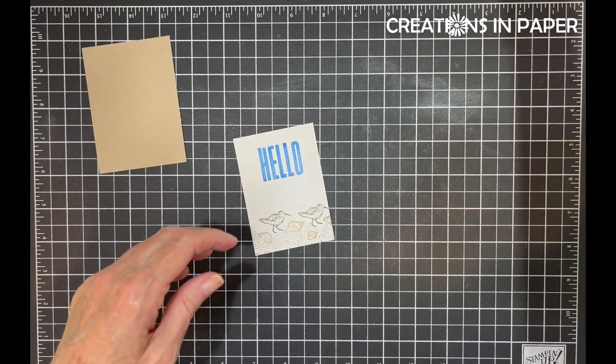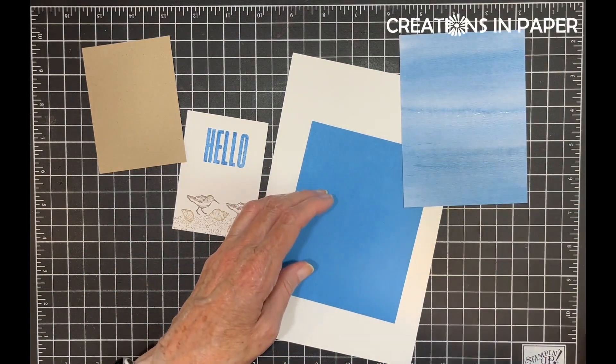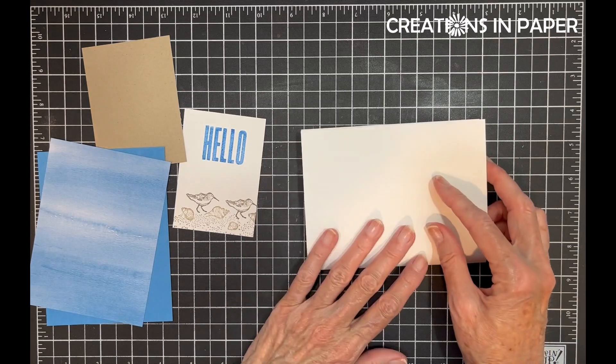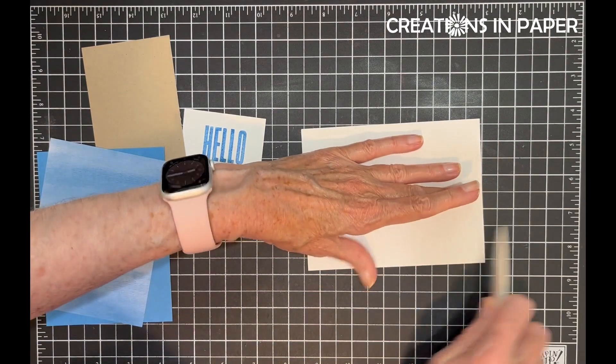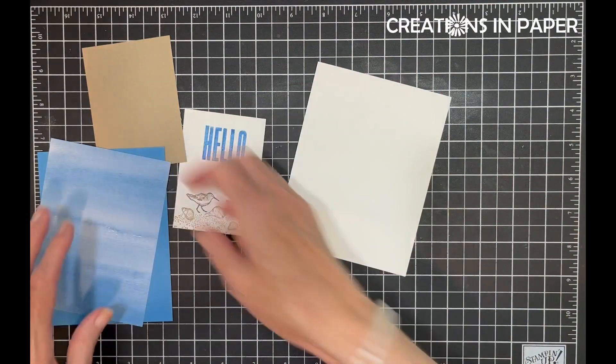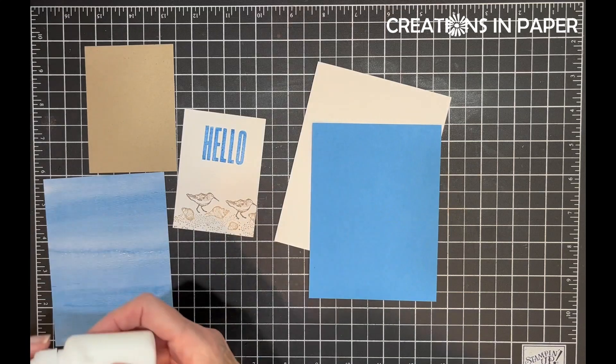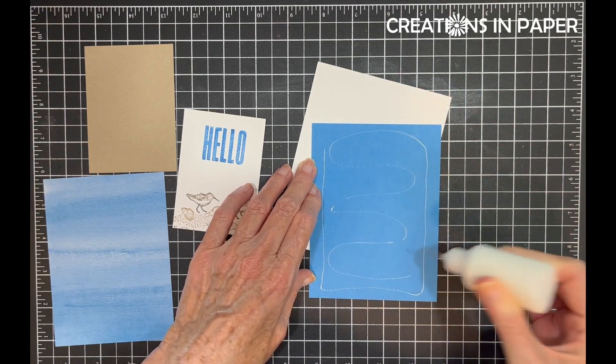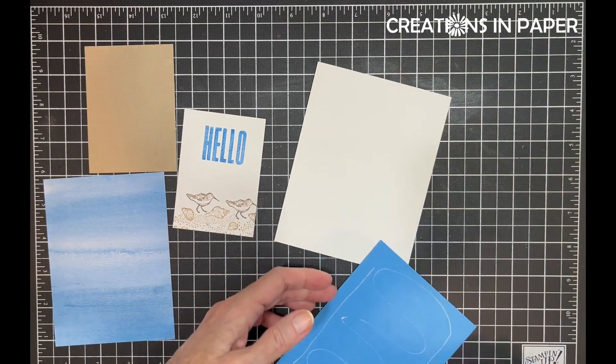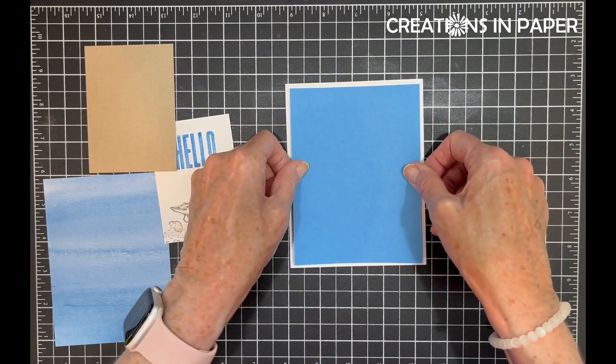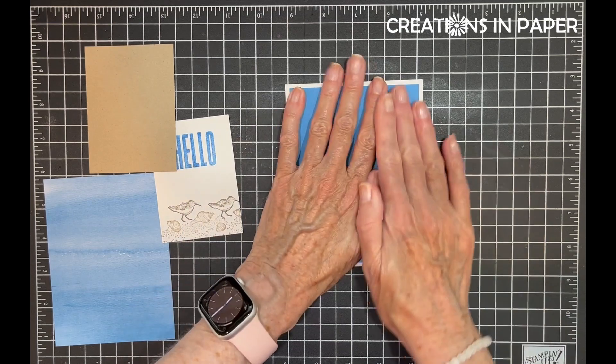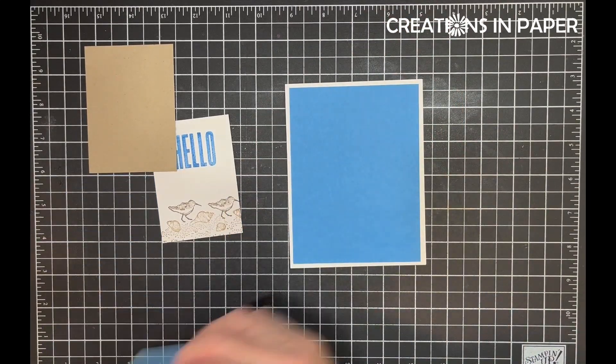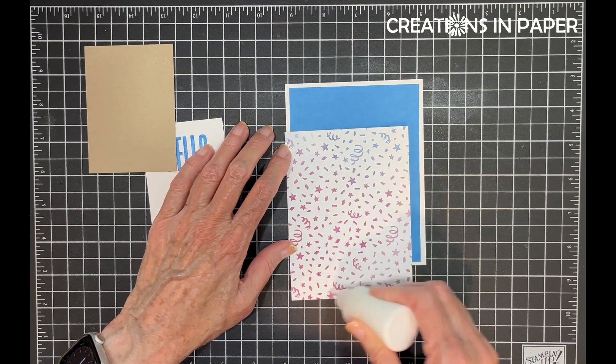Let's get this card put together. I'm going to pull in my other pieces here and all of this gets layered. So I'm going to start with my card base and I'm going to fold it on the score line and burnish it. I'm going to add the Azure Afternoon cardstock.